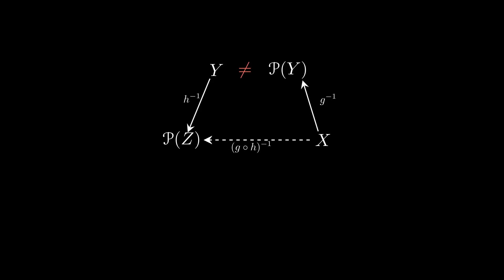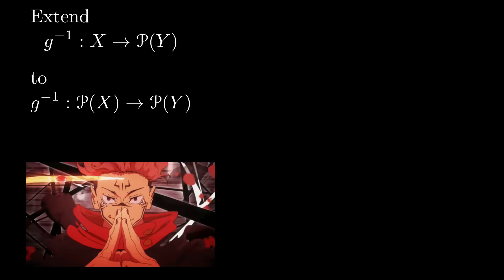Probably the easiest way to fix this is to change the domain of the preimage function to be the power set as well. Then everything can compose together the way we expect to. To extend the preimage function from X to the power set of X is simple. Instead of sending an element X to the set of all Y where G of Y equals X, we just send a subset of X to the set of all Y where G of Y is in that subset.